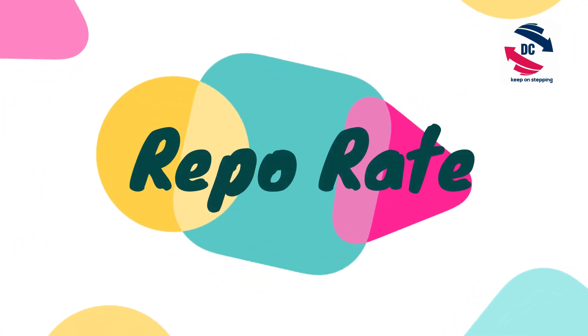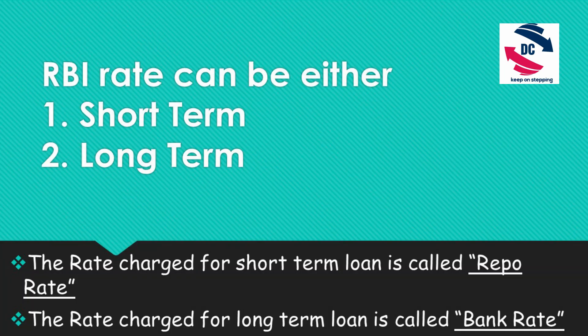Now consider the situation where a bank does not have sufficient funds to meet its daily expenses or to give away loans. In this situation, the bank will approach RBI for a loan. RBI agrees to give money as a loan but at a certain rate of interest. This rate of interest is called the repo rate. This loan from RBI can be short-term or long-term; the rate charged for short-term loans is called the repo rate.